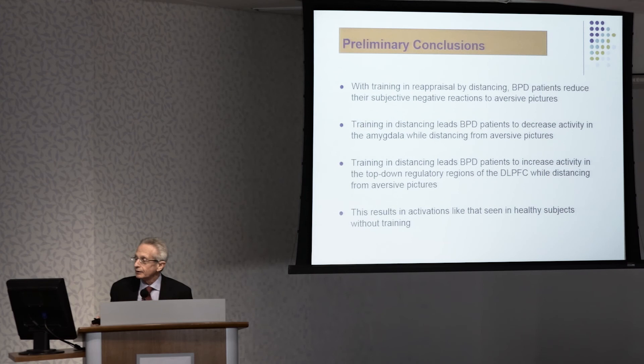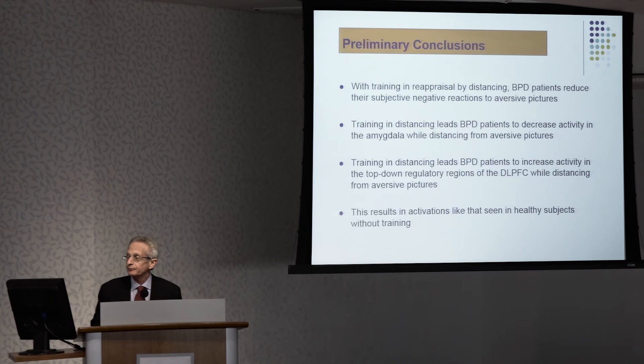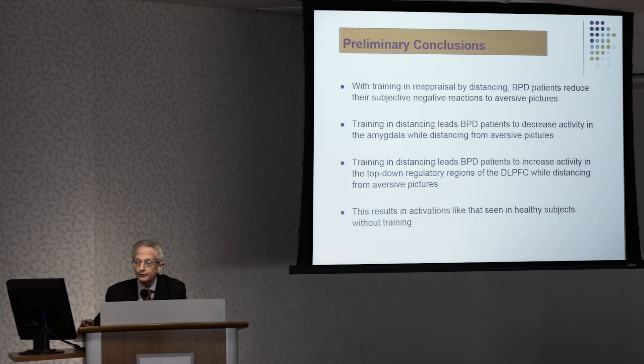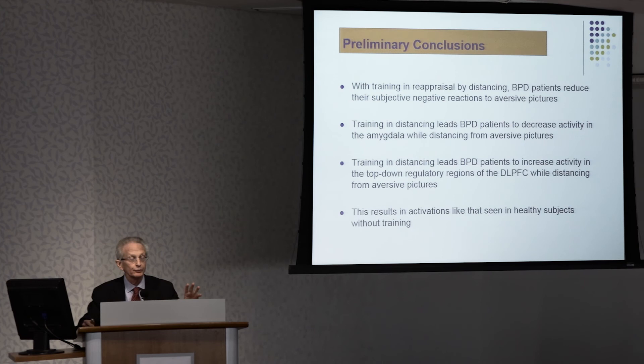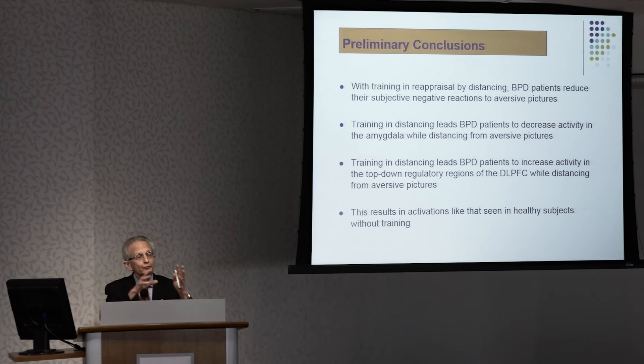This is half of our data set, so it's preliminary. But it looks like with training in reappraisal by distancing, borderline patients can reduce their subjective negative reactions to aversive pictures. Training in distancing leads to decreases in amygdala activity when looking at negative pictures and distancing, and also increases in activity in the top-down regulatory region of the dorsolateral prefrontal cortex. After training, borderlines showed neural activation patterns that looked like healthy people before training.